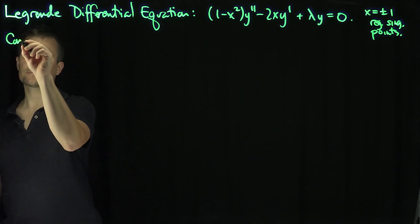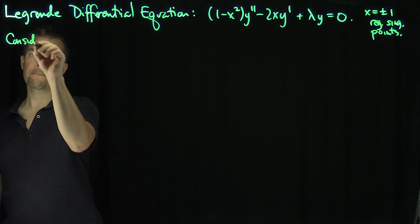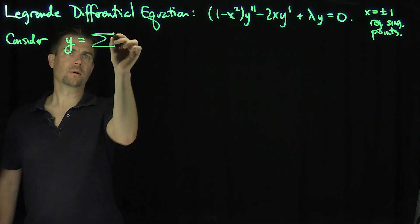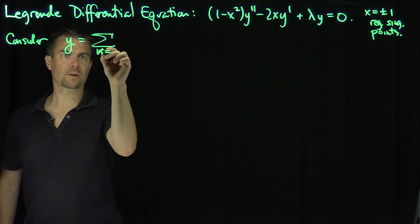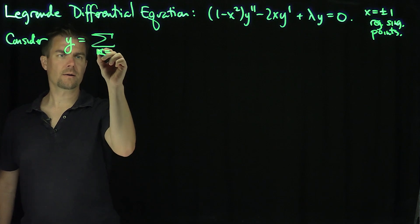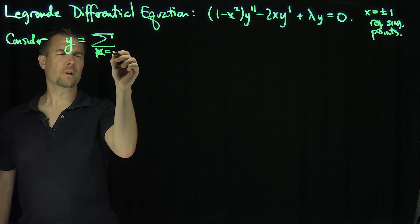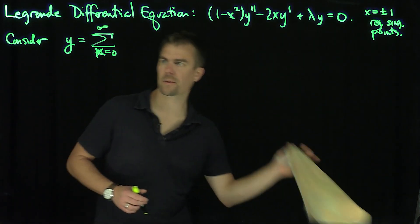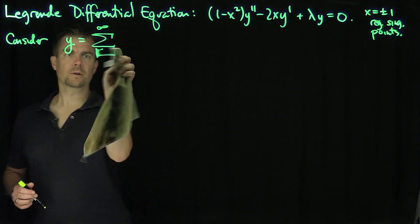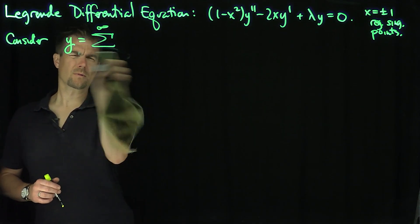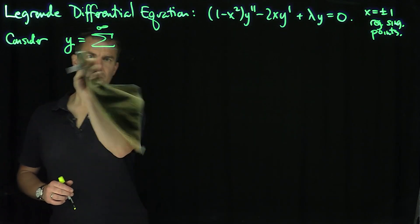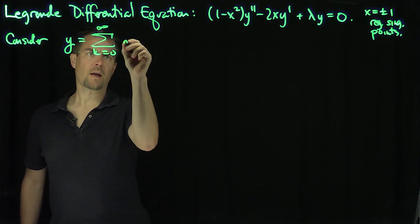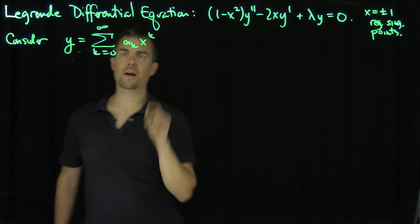Let's consider the solution centered at 0. I'm going to use k as my index of summation, k going from 0 to infinity, and write y as the sum from k = 0 to infinity of a_k x^k.